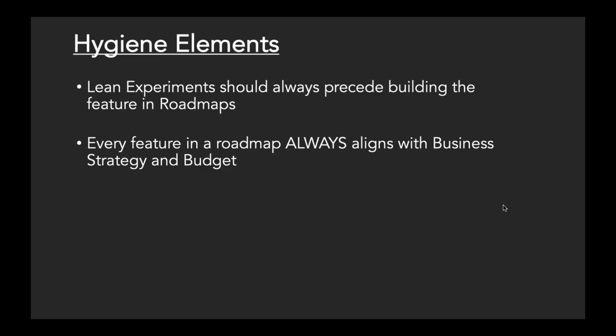So let's talk about hygiene elements — the non-negotiable ones. Lean experiments are a favorite topic of mine. When you build products, prototyping is a tool that is highly underrated. A lot of us build products for the market without knowing the market. If we can build prototypes that look almost real, there are a lot of prototyping tools, and sometimes you can build a lightweight product — a mock tool. If you can do that, a lot of things you don't have to put into the product roadmap.